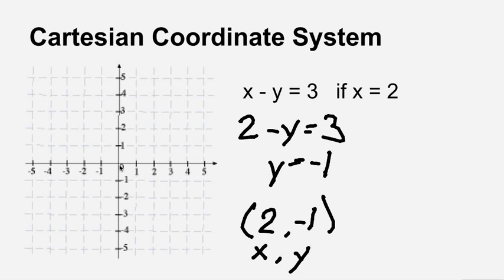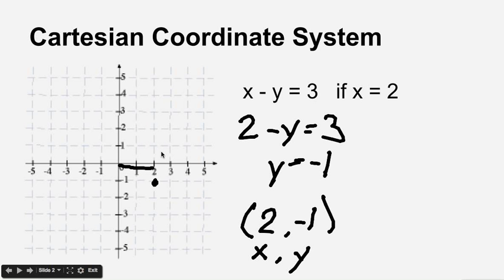To graph your answer, you would go out 2 along the x-axis and then down 1 along the y-axis, so your point would be right about there at (2, -1).